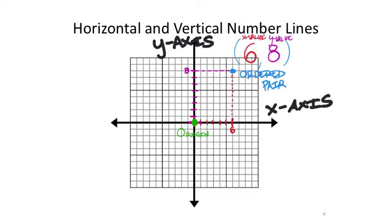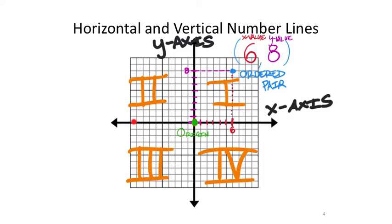We also have what we call quadrants, listed as Roman numerals. Starting with quadrant 1 in the top right — math people decided that — and you'd think it goes clockwise, but it actually goes counterclockwise. So quadrant 2 is top left, quadrant 3 is bottom left, and quadrant 4 is bottom right.